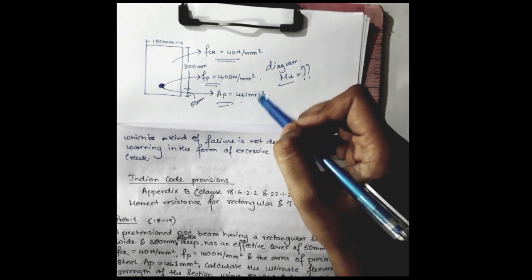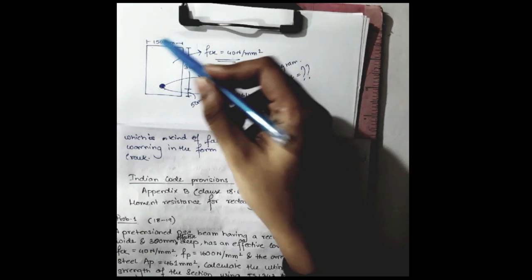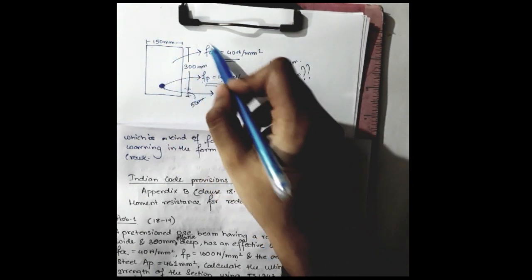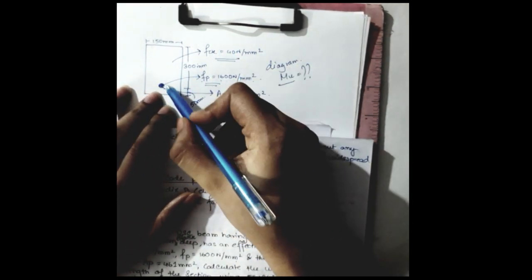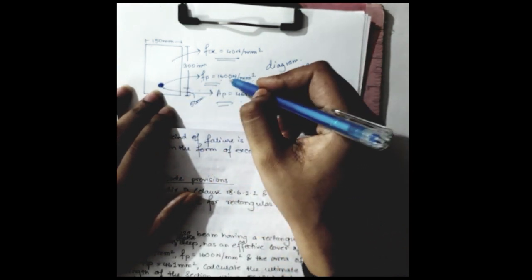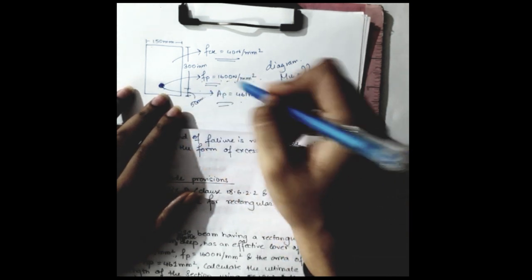So due to this dimension of concrete and the strength capacity, compressive strength capacity of this concrete, and the pre-stressing stress strength provided to this steel, 1600 Newton per millimeter square having this area, we need to calculate the moment of resistance of this section, which is Mu.